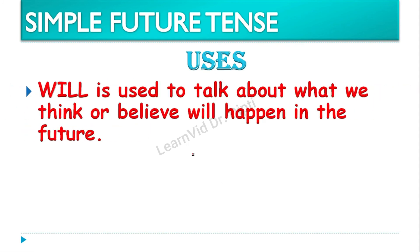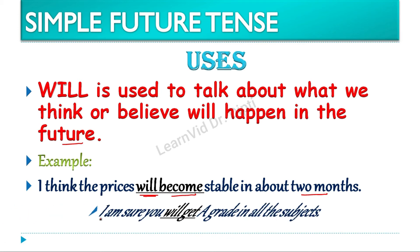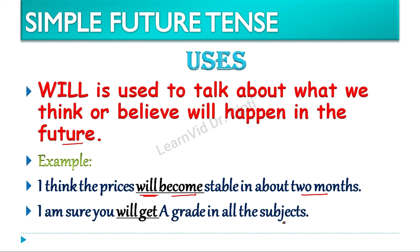The third use of will is to talk about what we think or believe will happen in the future. Example: I think the prices will become stable in about two months. Toh yahaan par hum think kar rahe hain ya believe kar rahe hain ki prices stable ho jayenge — will use hoga and become is the root form of the verb. Another example: I am sure you will get A grade in all the subjects — yahaan par again a belief is there, so will ka use karenge.